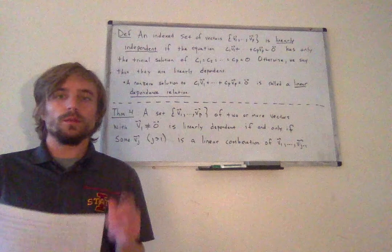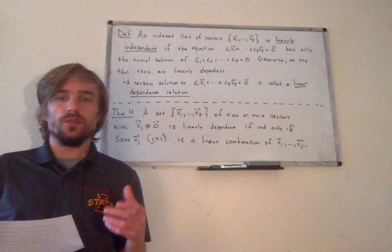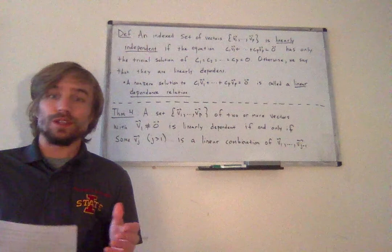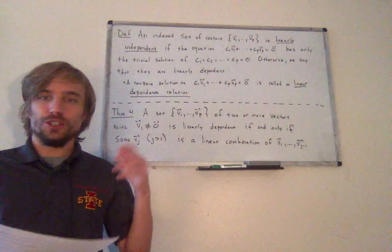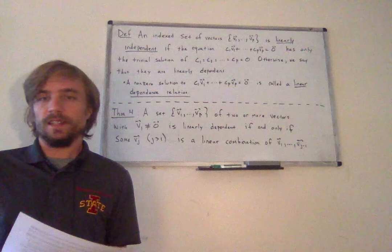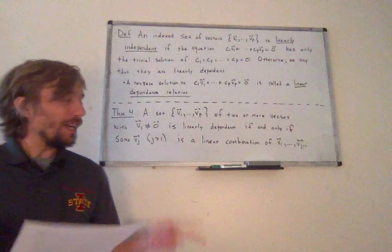Hello and welcome to section 4.3. This is video number one of this section. We're going to continue the trend with these more abstract vector spaces, redefining some concepts, showing how they hold for other vector spaces. We'll look at our favorite example of polynomials and then go right back to Rn in the end.